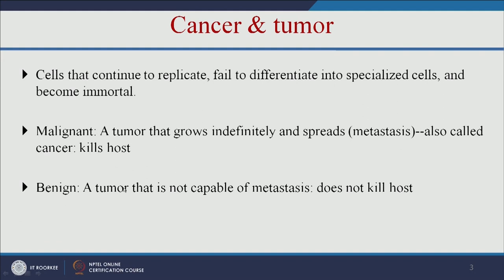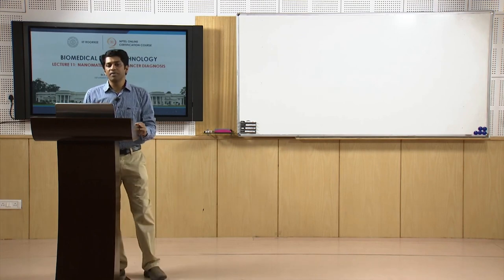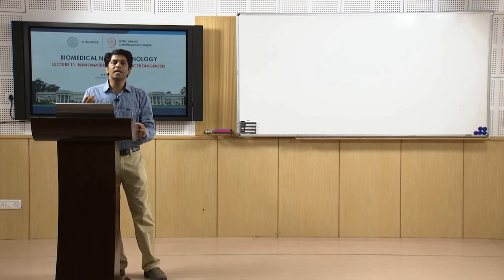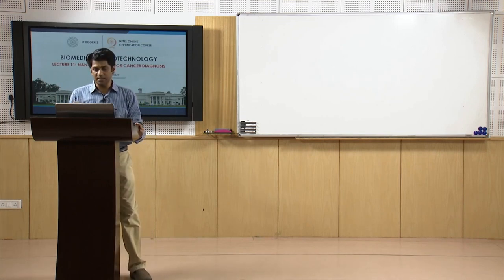A benign tumour is not capable of metastasis and does not kill the host. The main difference is that tumour cells are localized — they grow indefinitely at a particular location and can be removed by surgery. But in the case of cancer, the tumour cells spread from one location to another and kill the host. That is called cancer.